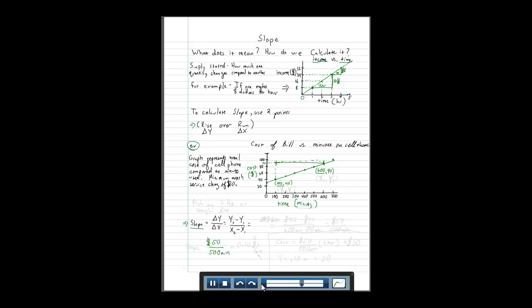So our slope of this line, our change in y over change in x, our rise over our run, or in this case, our slope means something in cost per time. So $50 per 500 minutes is simply stated as just 0.10 cents a minute, or $0.10 per minute.